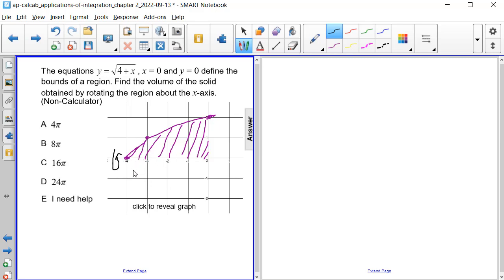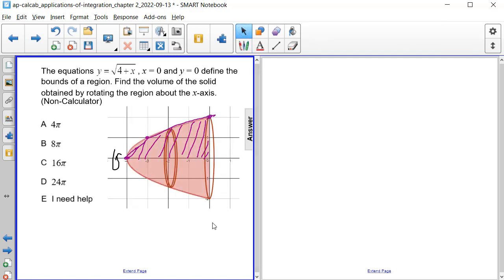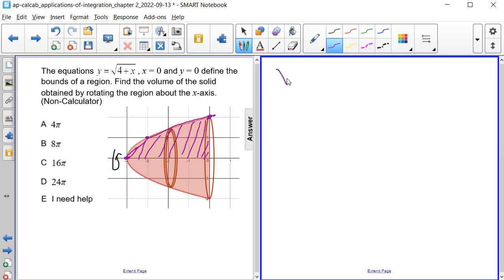So we're going to end up creating little mini disks vertically here. And we can clearly see from the graph that the volume equation is going to be pi times the integral. And because we're rotating about the x-axis, we're going to be integrating with respect to x. And the lower and upper bounds are easy to see here. It's from negative 4 to 0.